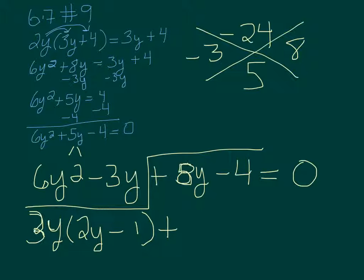Okay, so now I can take out a 4. You need to put plus or minus, but I'm taking out a positive 4 because you want this sign here to match with this sign. If they do, take out a positive. If they don't, take out a negative. So then we're left with 2y minus 1 as well.